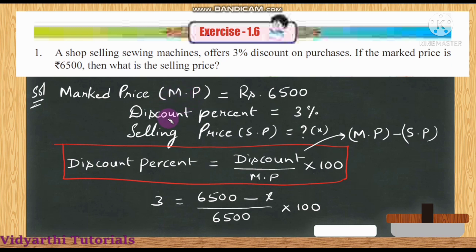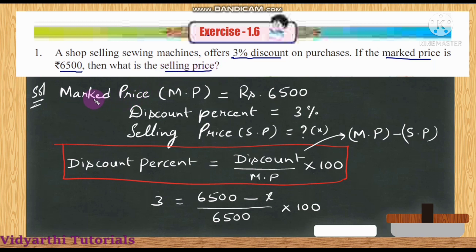Let us write what is given in the question. The shop offers 3% discount. Market price is equal to ₹6,500 and discount percentage is equal to 3%.